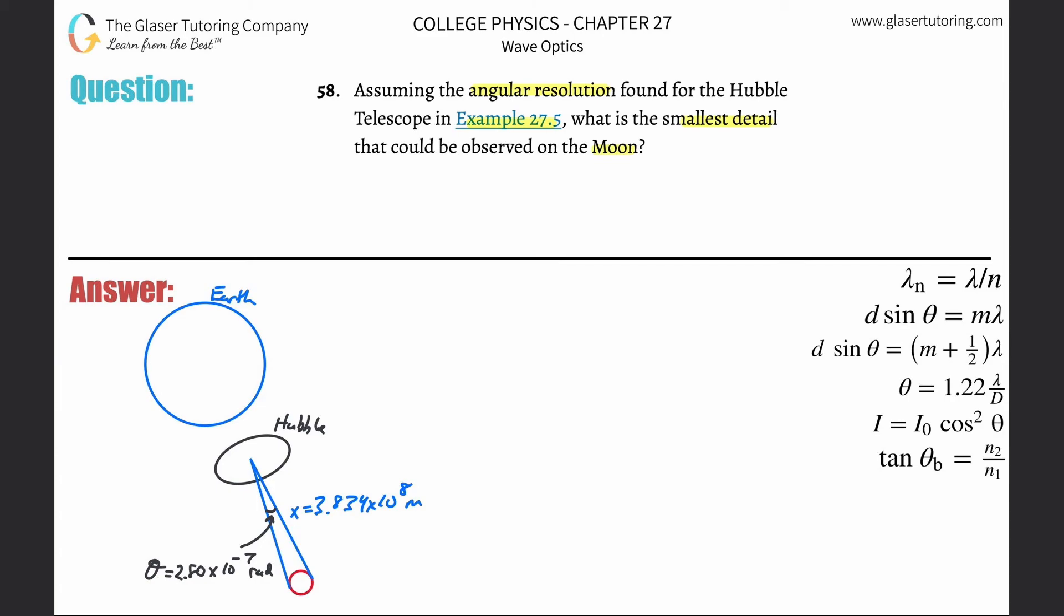So now what we need to do is somehow figure out the smallest detail. In other words, they're trying to figure out what's the diameter, or what's the distance between these two points? The smallest possible resolution that we can see, or the smallest object.